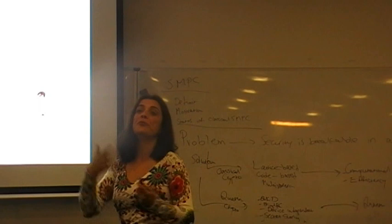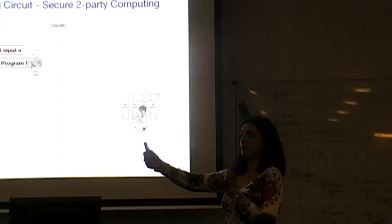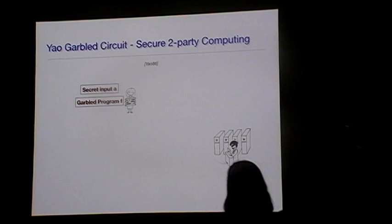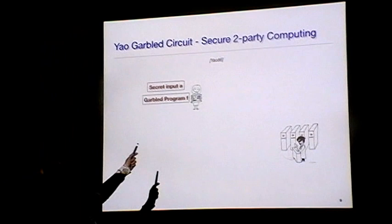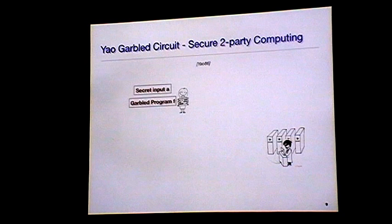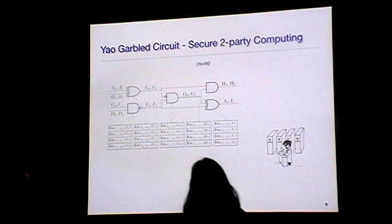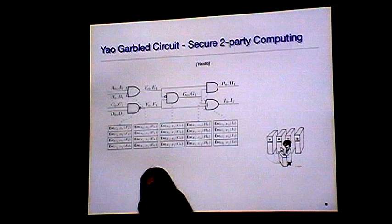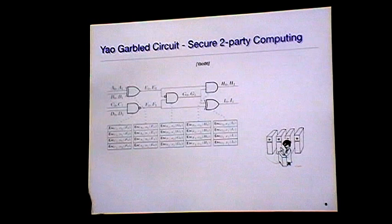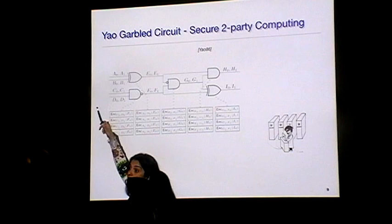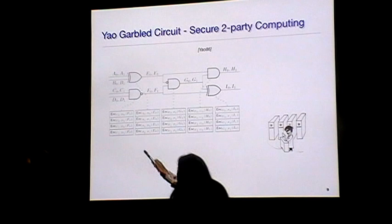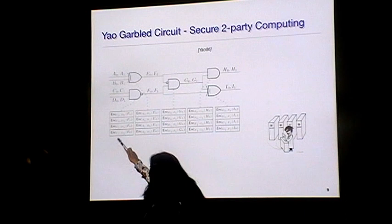Let me tell you about the Yao garbled circuit. One of the first protocols that started the field of secure multi-party computation was the Yao protocol — the millionaire problem. Two parties want to know who has more money without announcing their amounts. This is a secure two-party computation: my secret is not known but the outcome is. This protocol from 1986 is one of the most efficient two-party secure computation protocols. How does it work?